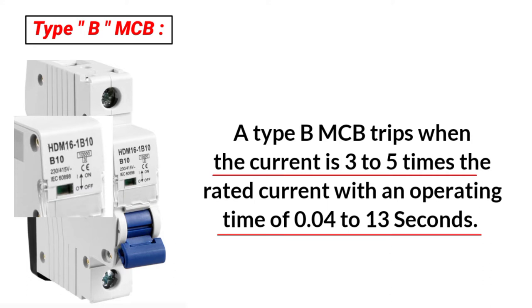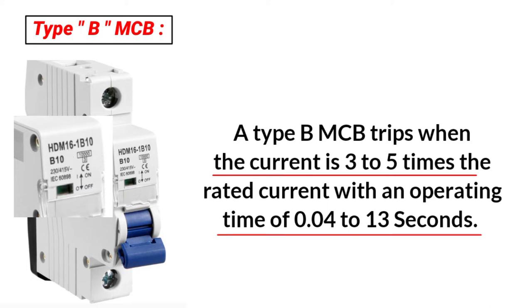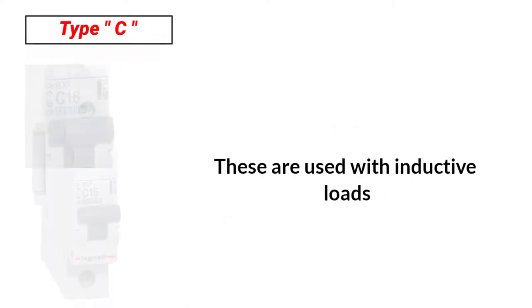For example, if you have a 5-amp circuit and there is a fault, the current becomes multiple times the normal current — 3 to 5 times. So if normal current is 5 amps, 3 times gives 15 amps. If the MCP rating is less than 15, like 10 or 7 amps, it will trip. Type B MCP trips at 3 to 5 times rated current.